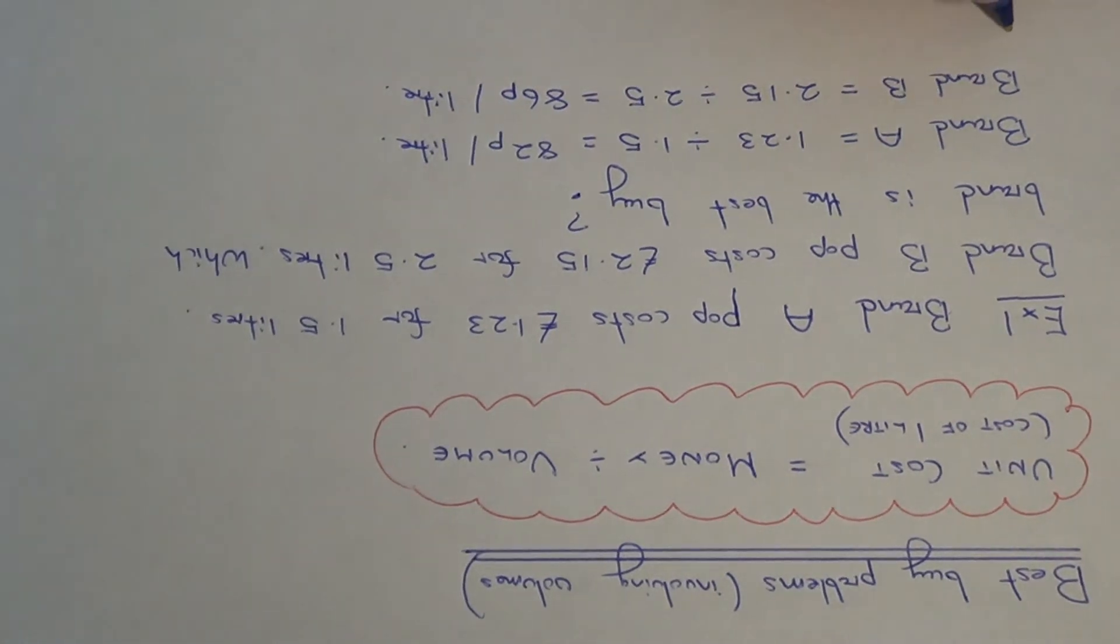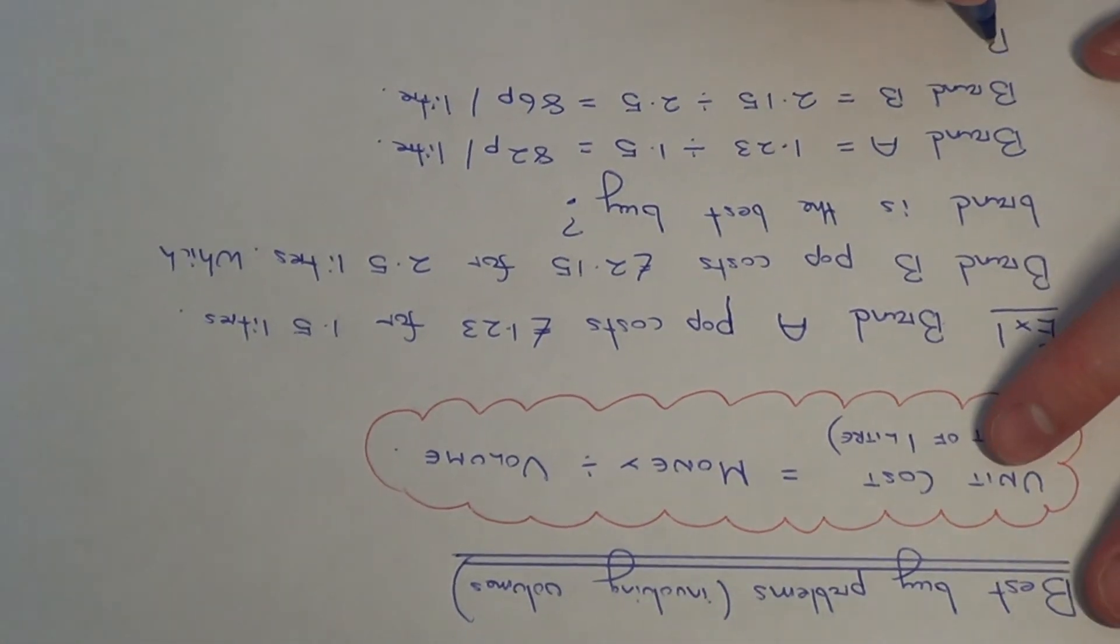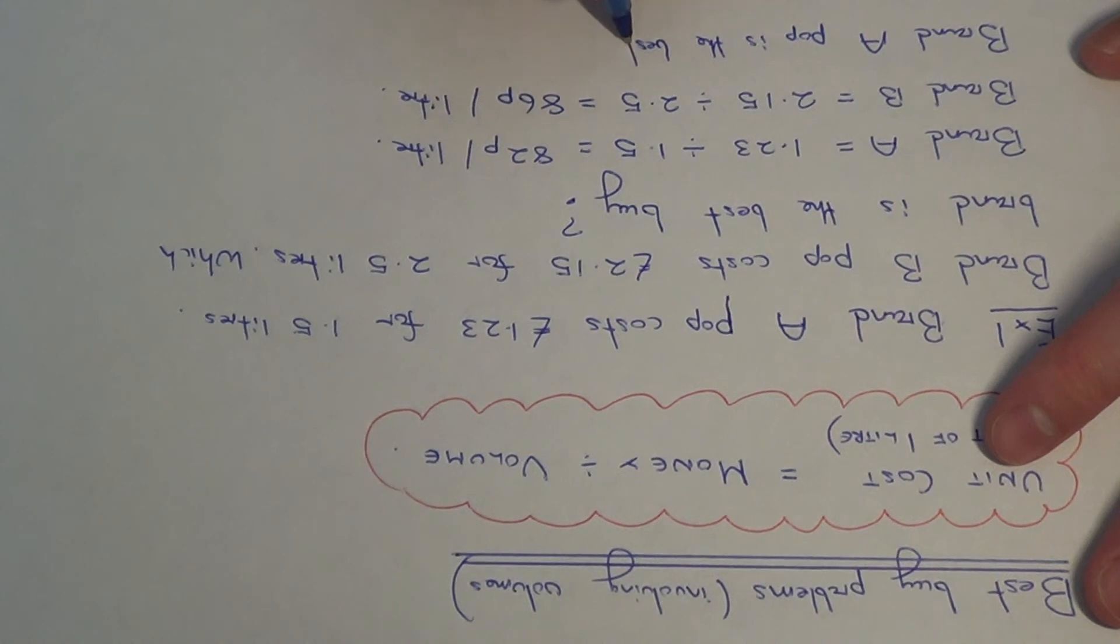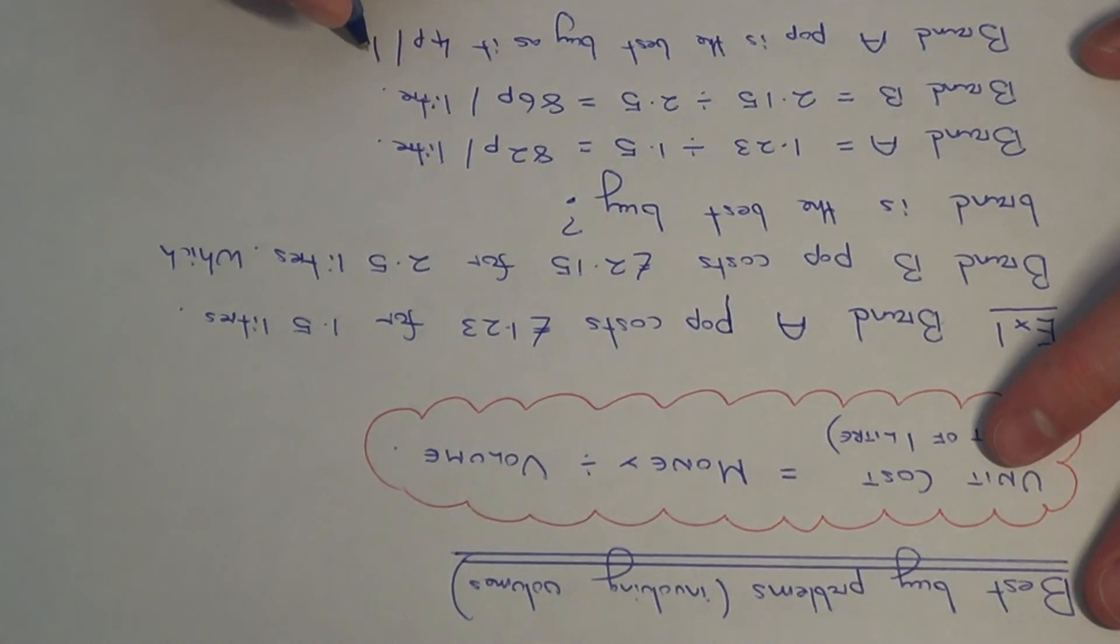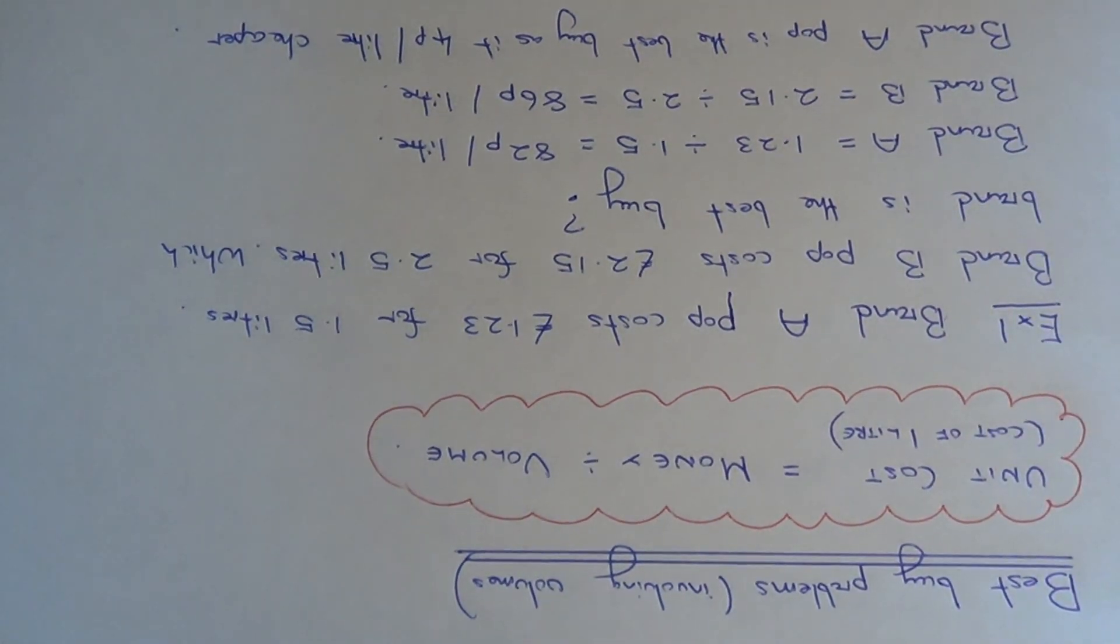We just need to state the conclusion. Brand A Pop is the best buy, as it's 4p per litre cheaper. Thanks for watching.